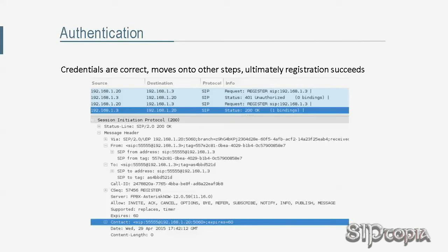Since the credentials Tarzan provided in this scenario are correct, the authentication succeeds. Please note that the request goes through several other steps mentioned earlier before the UAS produces the 200 OK response. The 200 OK response is shown here just to indicate that the authentication was successful.